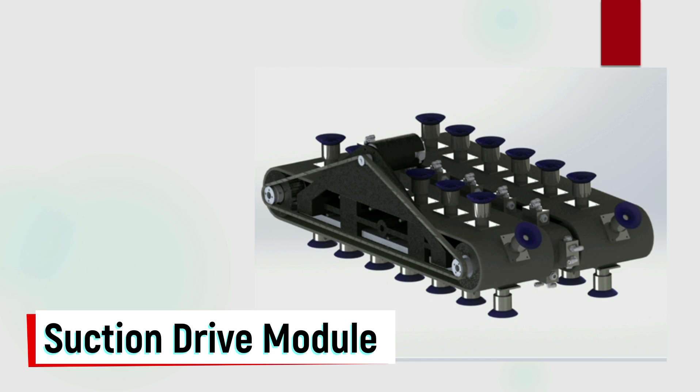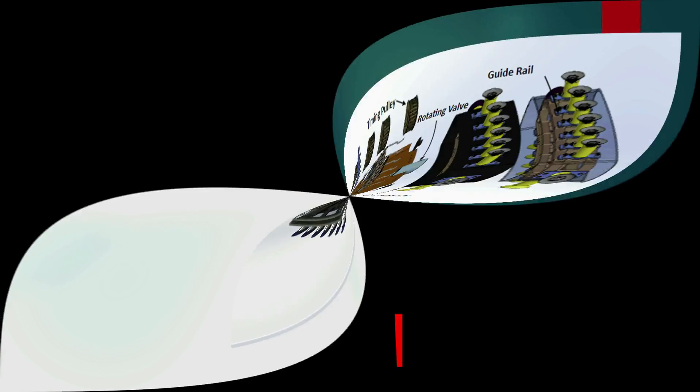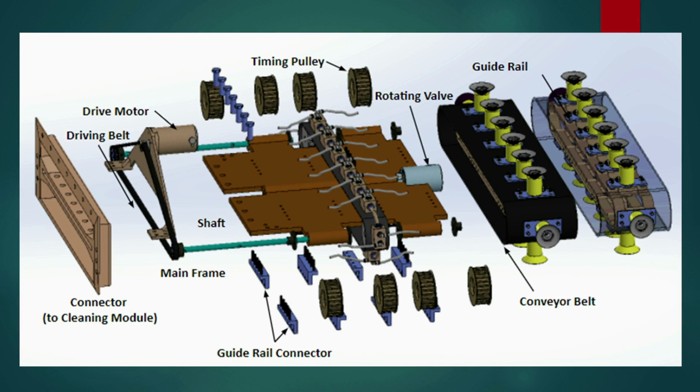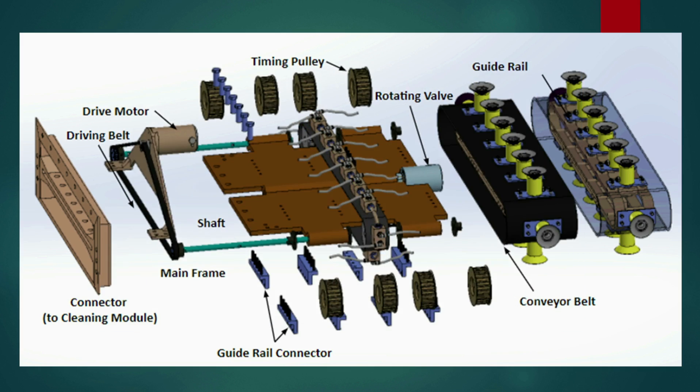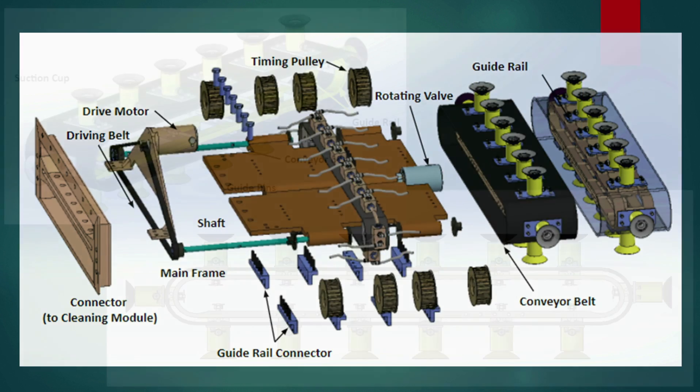The drive is achieved using the suction module which comprises of timing belt with vacuum suction cups attached at regular intervals. It comprises of multiple parts such as drive motor, timing pulleys and belt, rail guides, shafts and base frame. It consists of a rotating valve that avoids dangling of vacuum pipes as the timing belt rotates. It is designed in a manner to reduce weight and cost without compromising on functionality and efficiency.